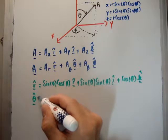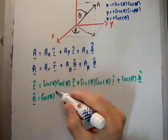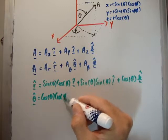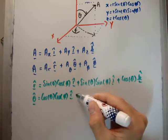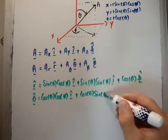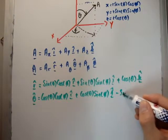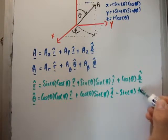Then, theta hat is cos theta cos phi in the i hat direction, cos theta sin phi in the j hat direction, and minus sin theta in the k hat direction.